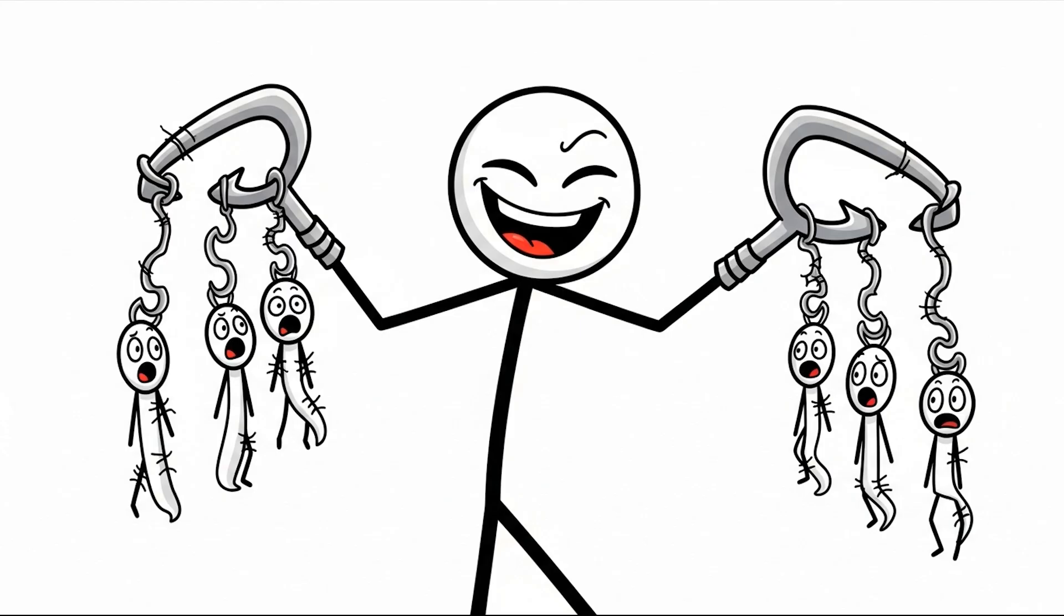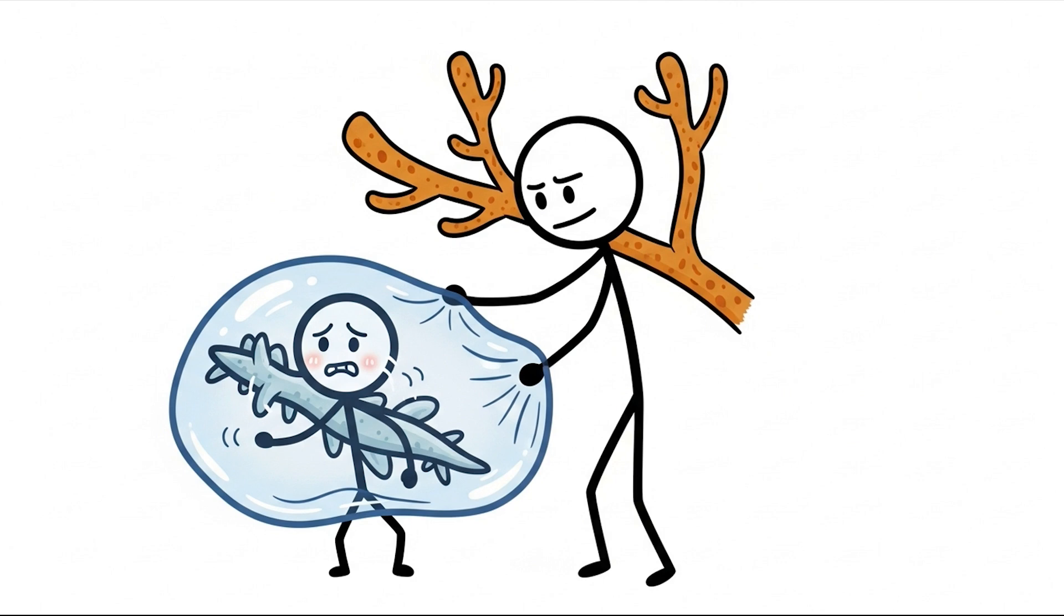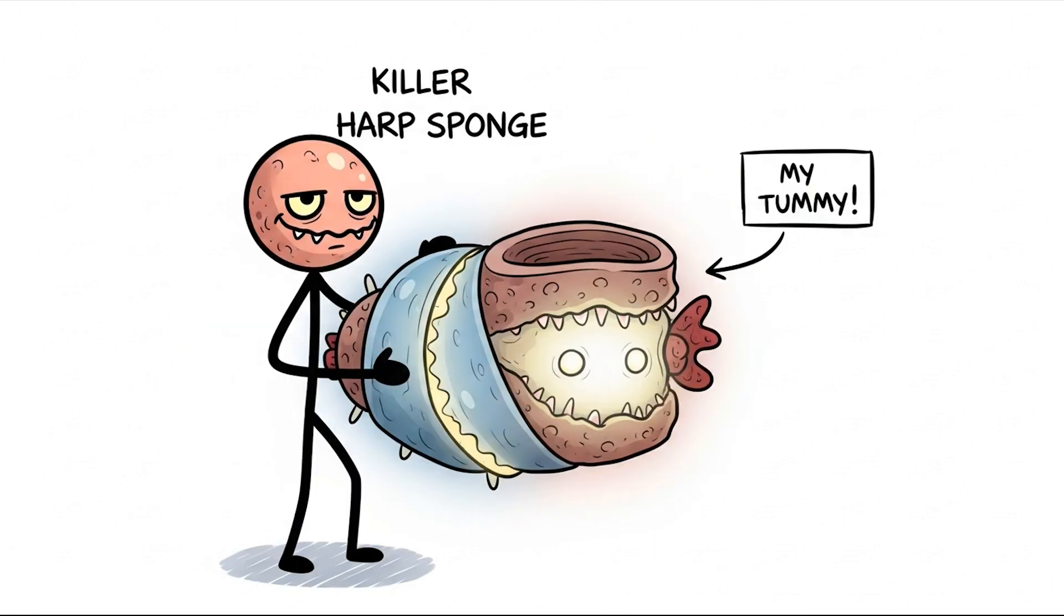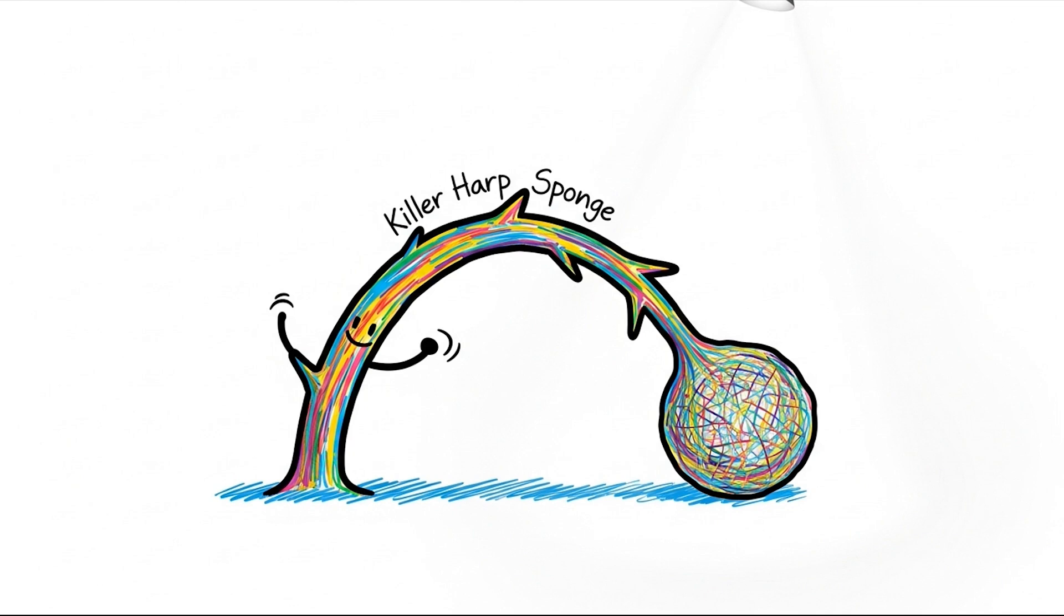When small organisms swim by, perhaps thinking they've found a nice place to rest or hide, the hooks grab them instantly, like bugs on fly paper. The sponge then meticulously wraps its captured prey in a thin membrane and proceeds to slowly digest it alive. It's essentially wearing its stomach on the outside, a truly horrifying form of predation.